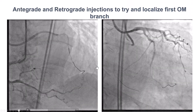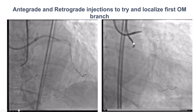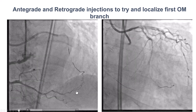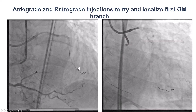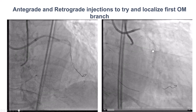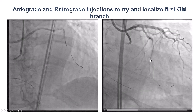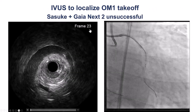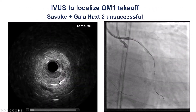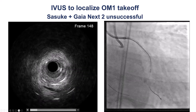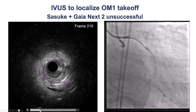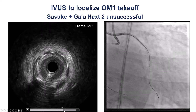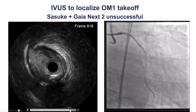The next step was to try to localize the origin of the obtuse marginal. With contralateral injection, we had successfully crossed into the second obtuse marginal, but we wanted to optimize the outflow, especially given that this is a diffusely diseased and small vessel. We used intravascular ultrasound and had difficulty localizing the location of the proximal cap of the obtuse marginal branch, where there was some calcification.